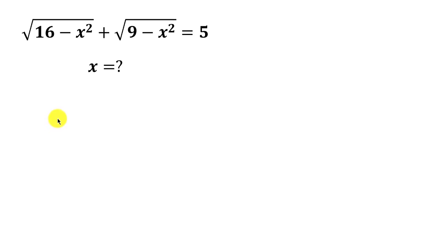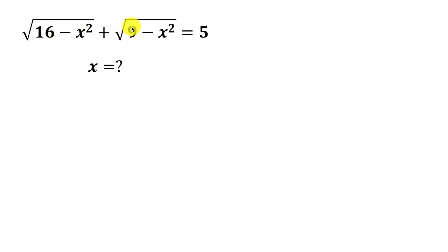Welcome back to my YouTube channel. We have this nice and beautiful question on the board that says: find the values of x that satisfy the square root of (16 minus x squared) plus the square root of (9 minus x squared) equals 5. Our first step will be to move the square root of (9 minus x squared) to the right hand side.